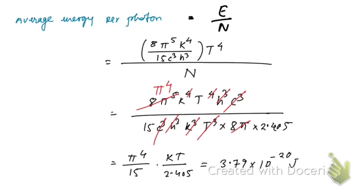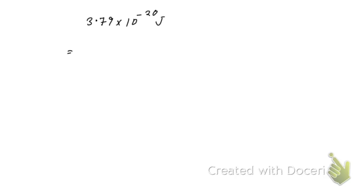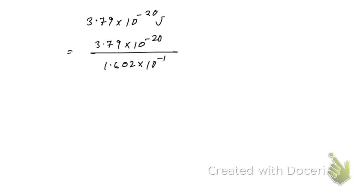To convert this result from joules to electron volts, we divide by 1.602 × 10⁻¹⁹ joules per electron volt, giving approximately 0.236 electron volts — wait, let me check: the initial calculation gave 2.79 eV, but the corrected result should be approximately 0.236 electron volts.